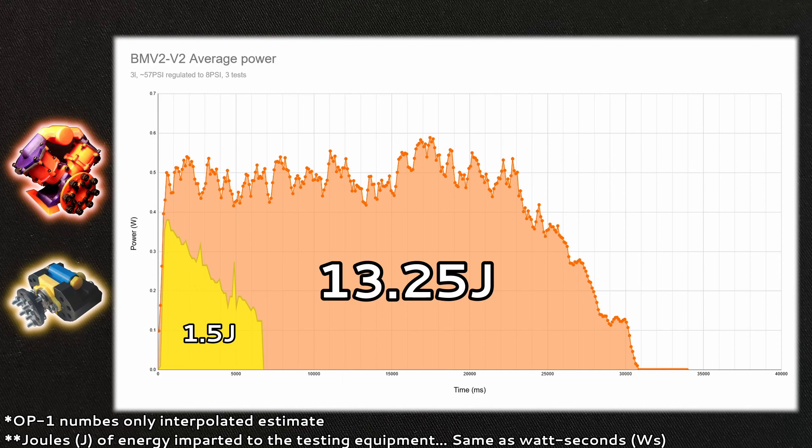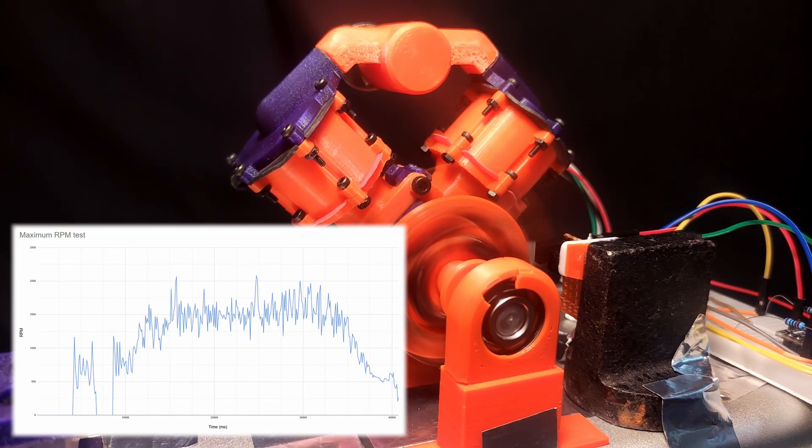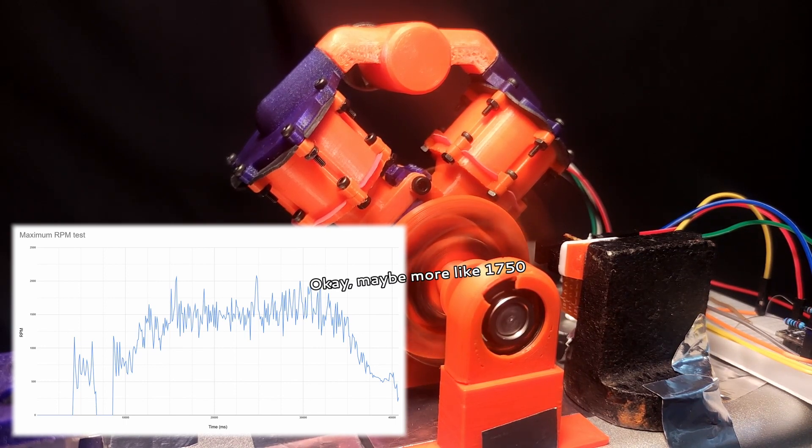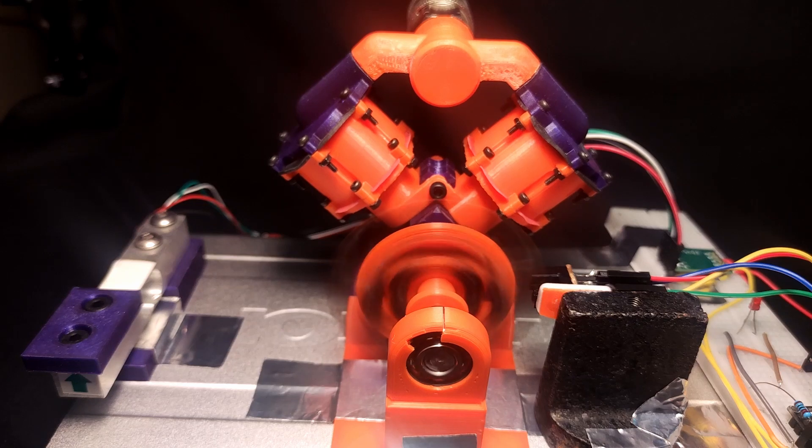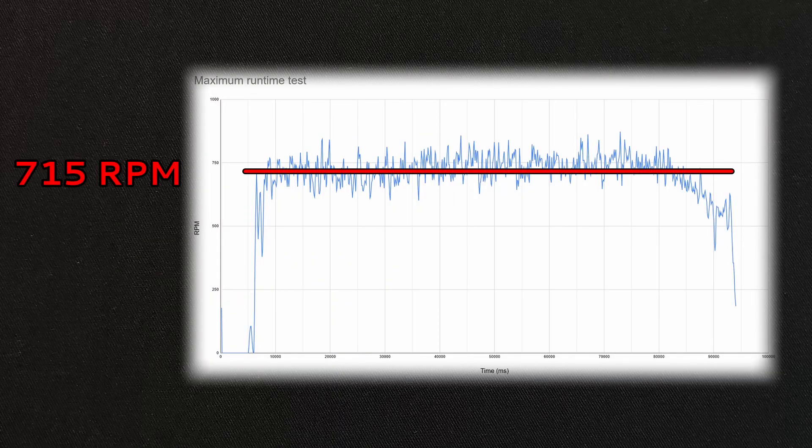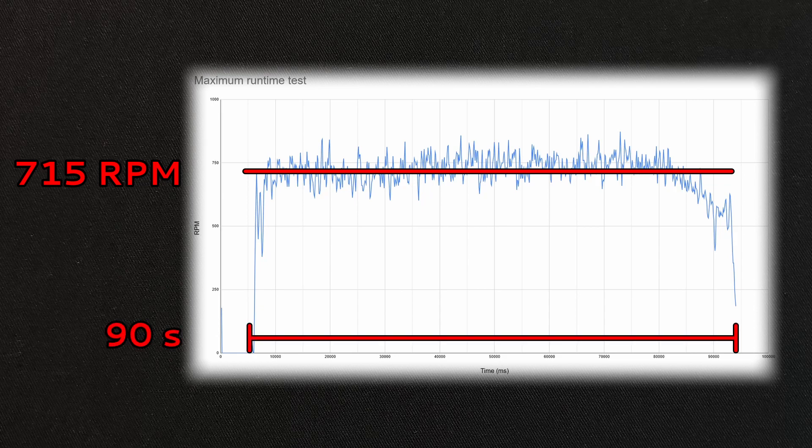The maximum RPM of the engine is around 1800 with potential peaks of 2000 RPM. The idle speed is strongly dependent on the flywheel characteristics. However, with the flywheel fitted here, the idle RPM turned out to be around 715 and the idle runtime was around a minute and a half.